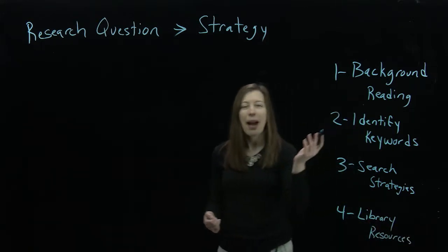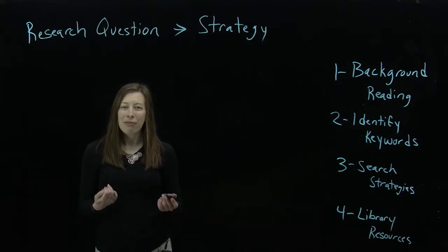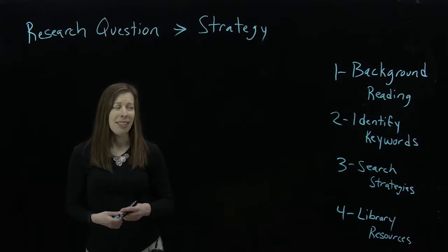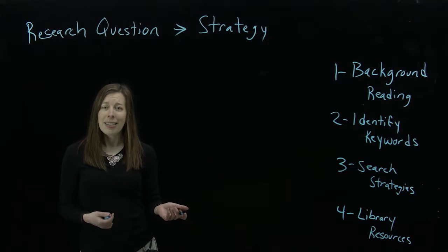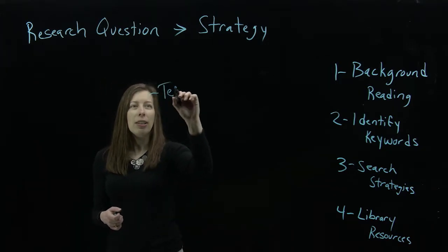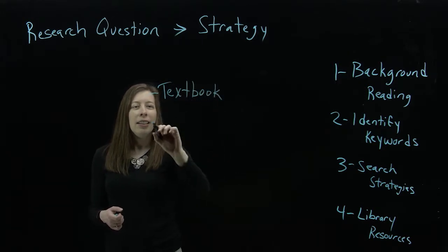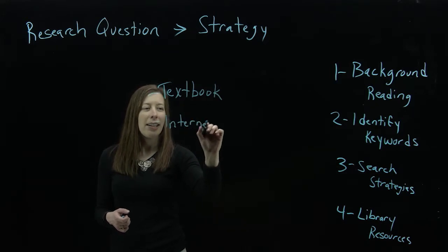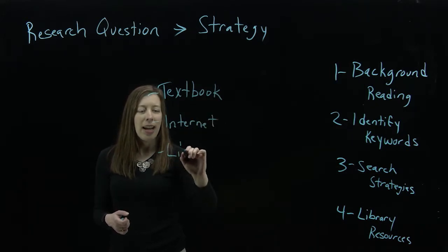So first, background reading. Background reading is important because it's very difficult to do research on a topic that you don't fully understand. So there are a couple different places that you look for information. You might look in your textbook, you might do an internet search to see what's out there, and then, of course, using the library resources.